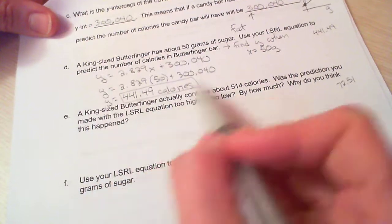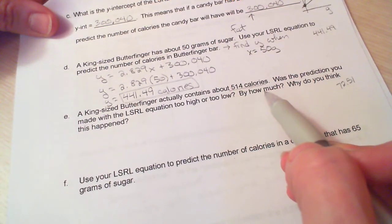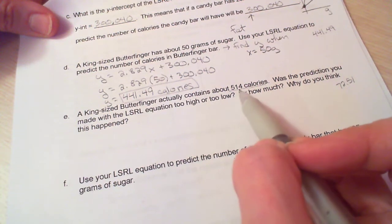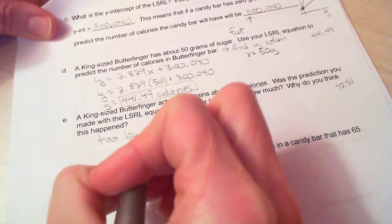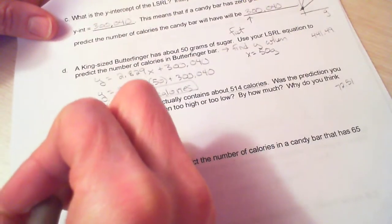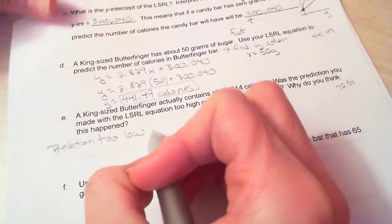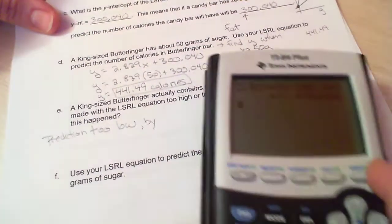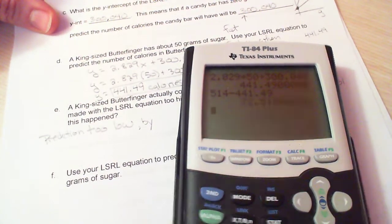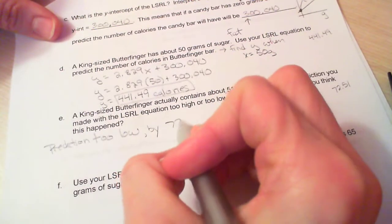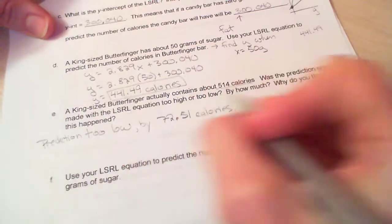So now here they say this is using my line to predict this. Now here they tell me, well a king-sized Butterfinger actually has this many calories: 514. Was the prediction you made too high or too low? Well it actually has 514, we predicted 441. So our prediction was too low. So let's add the word prediction here. Prediction is too low by how much? By 514 minus 441.49, by 72.51 calories. So that was the answer to that.